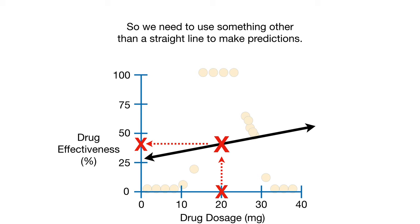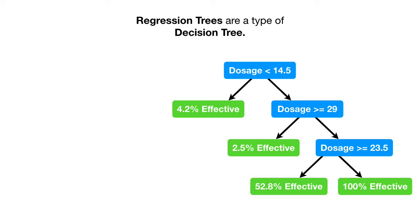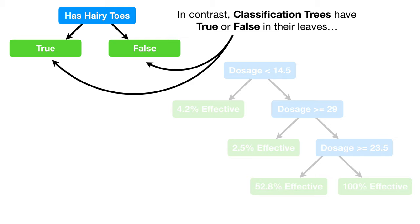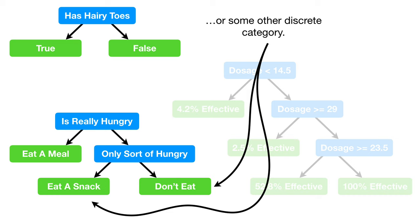One option is to use a regression tree. Regression trees are a type of decision tree. In a regression tree, each leaf represents a numeric value. In contrast, classification trees have true or false in their leaves, or some other discrete category.